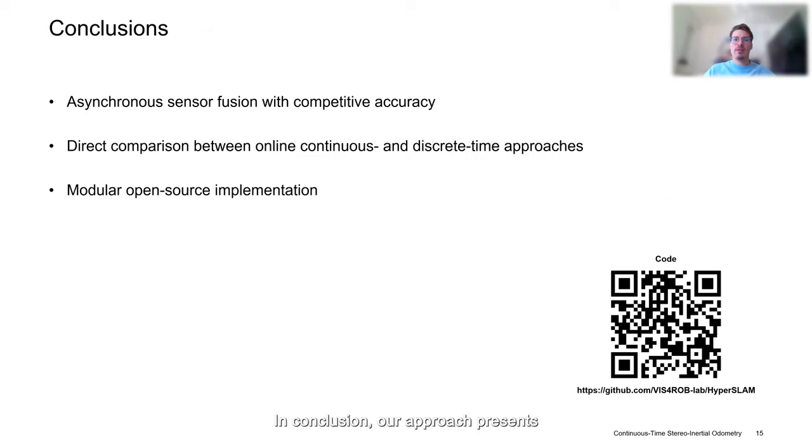In conclusion, our approach presents means to fuse generic, asynchronous sensor inputs at a competitive accuracy to established discrete-time methods. In addition, our work also provides a direct cost comparison between continuous and discrete-time approaches in real-world online experiments for the first time. Lastly, all associated implementations are made available as a modular open-source framework on GitHub.